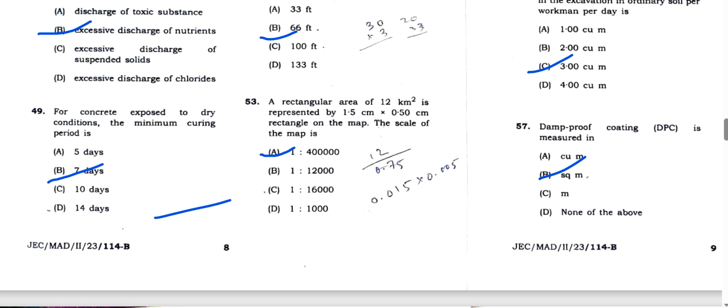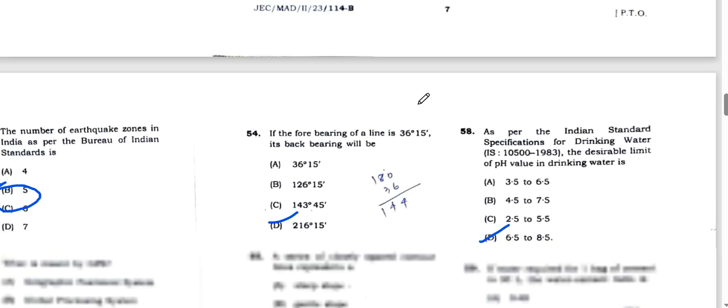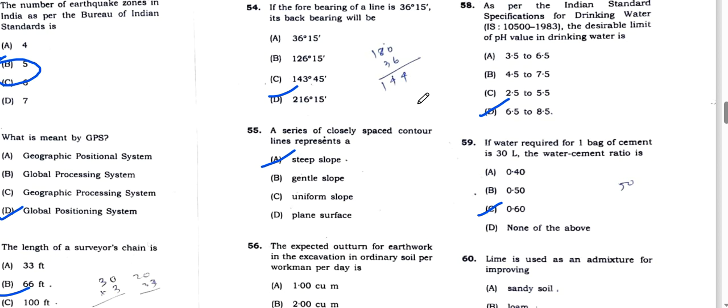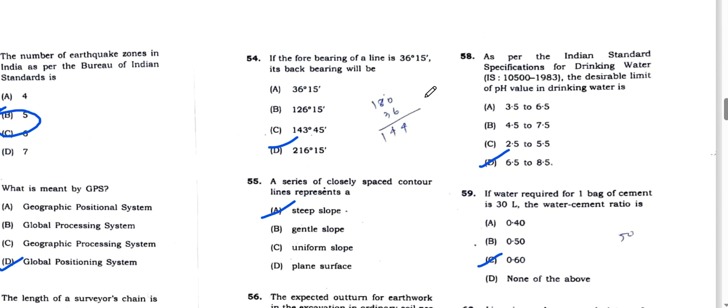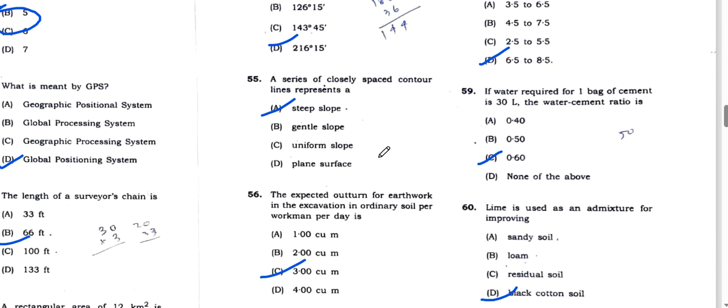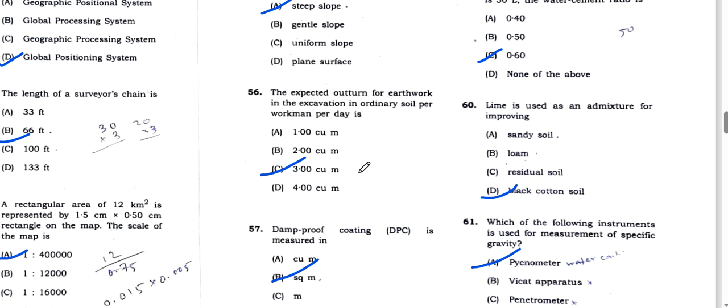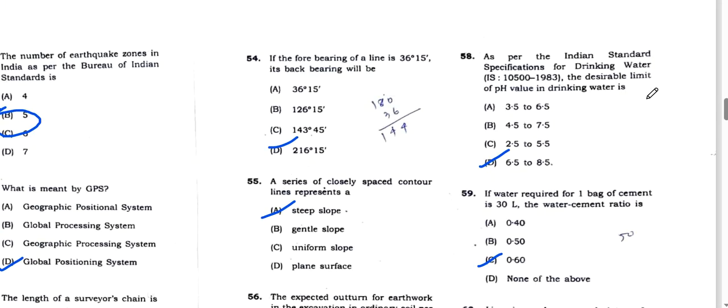Question number 54 is a fore bearing, so you have to add 180 degrees with 36 degrees 15 minutes and you will get 216 degrees 15 minutes. A series of closely spaced contour lines represent steep slope. Question 56, the expected outturn of the excavation in ordinary soil per workman is 3 cubic meters. Option C is correct.